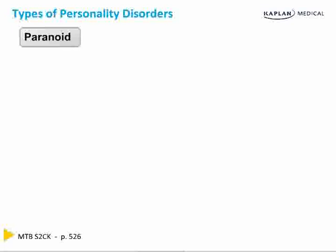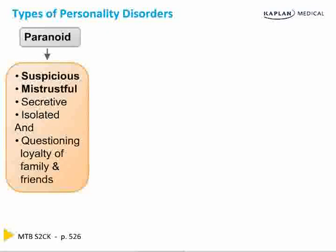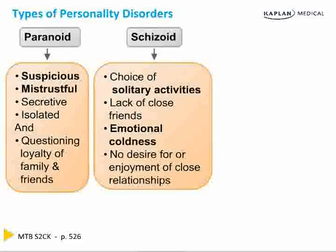For paranoid personality disorder, look at how it differs from schizophrenic psychotic disorder. These people are suspicious, mistrustful, secretive, isolated, and question the loyalty of family and friends — they think everyone is out to get them and trying to steal from them. Schizoid personality disorder are the loners: they choose solitary activities, lack close friends, show emotional coldness, and have no desire for close relationships. They actually choose careers that enable this — like running movie theater projections or working the night watchman's graveyard shift alone. They're happy being loners.